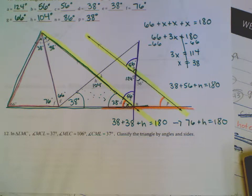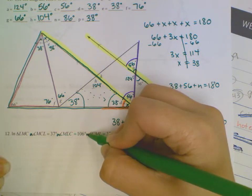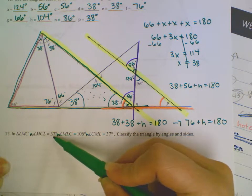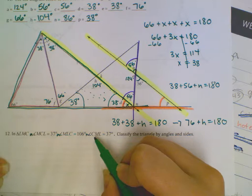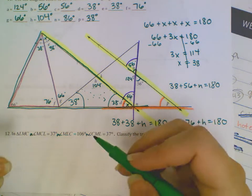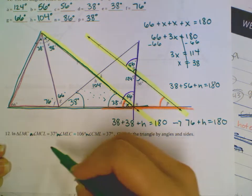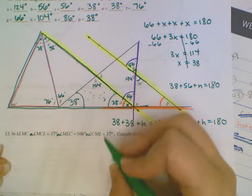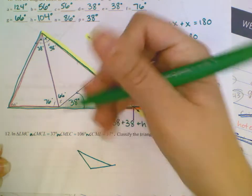For number 12, it tells me in triangle LMC the measure of angle MCL is 37 degrees, the measure of angle MLC is 106 degrees, and the measure of angle CML is 37 degrees. Classify the triangle by its angles and sides. So first, if I've got one triangle I'm dealing with, I'm going to draw it out. I'm going to draw, I know that this is 106 degrees, so I'm going to make an obtuse triangle, and it'll be just a rough sketch. However, the ordering does matter because if I've got an obtuse angle.